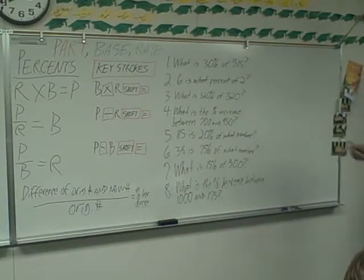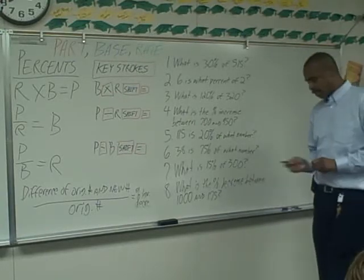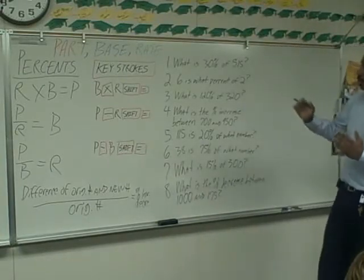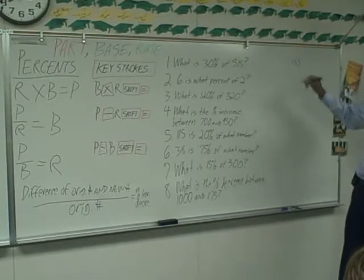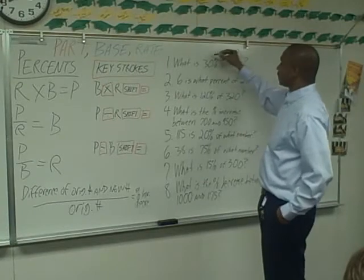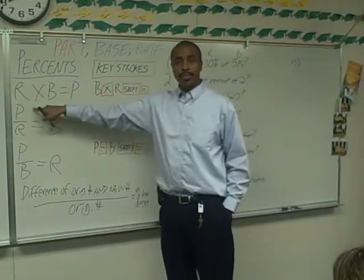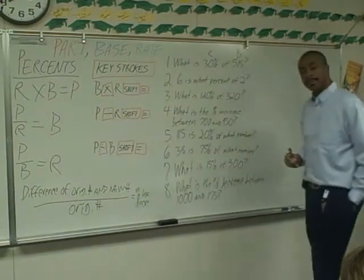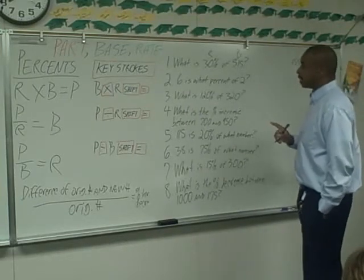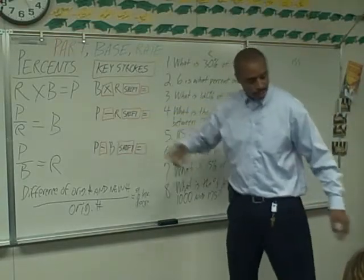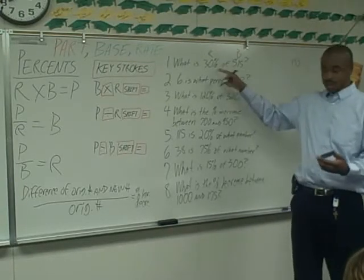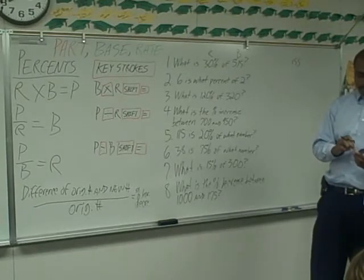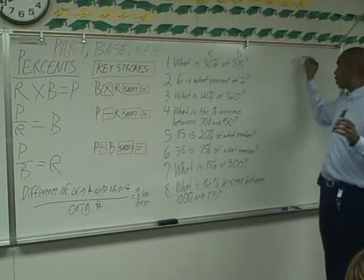There are eight sample problems here to get us started before we jump into the word problems. The first one is: what is 30% of 515? The answer is 155. The two parts we have are the base and the rate, so we use the formula rate times base equals part. On the calculator, you plug in the base — 515 — multiply it by the rate — 30 — then hit the shift key and the equal sign to get the percent, and you get 154.5, or 155 rounded up.